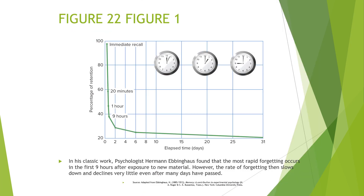This is Figure 1, at the top of page 226. This is a study done by Ebbinghaus — a study he conducted on himself. Ebbinghaus lived between 1885 and 1913. In his classic study, Ebbinghaus found that the most rapid forgetting occurs in the first nine hours after exposure to new material. However, the rate of forgetting then slows down and declines very little after many days have passed.